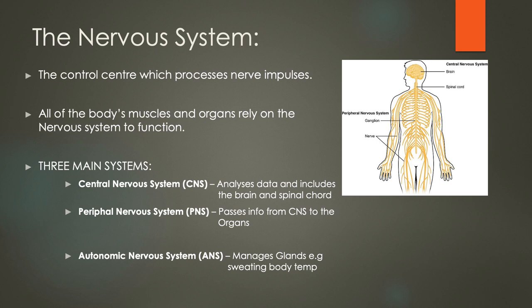Then we have the peripheral nervous system, which passes information from the central nervous system to the organs — it's a passageway passing information between the two different elements. Lastly we've got the autonomic nervous system. This nervous system manages the glands within the body, so it manages our temperature, how much we're sweating, how hot or cold we want to be, and it can regulate that temperature by sweating to release some of that heat.